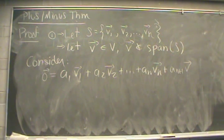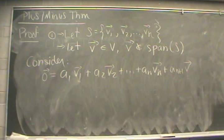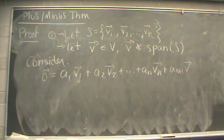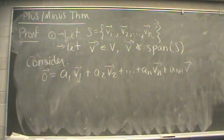Next, we set up a linear independence equation where all of the V's are included. So we have a1·V1, a2·V2, all the way up to an·Vn, and at the end we tack on a(n+1) times our vector V.